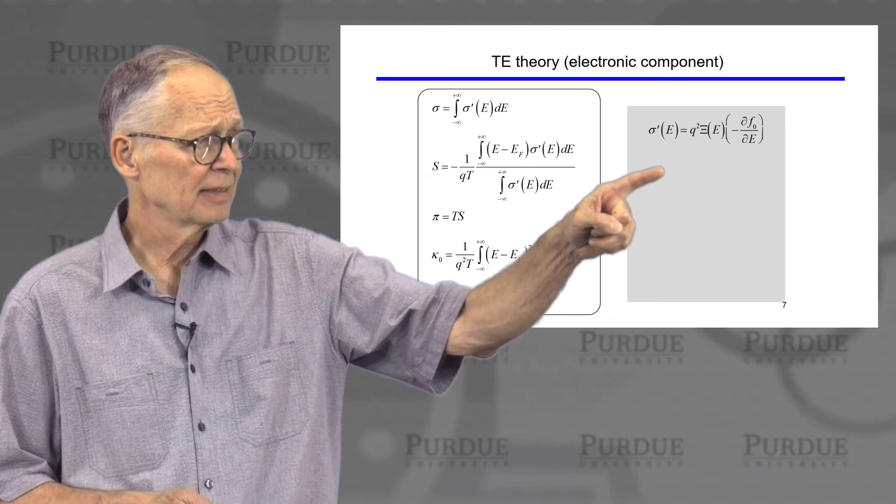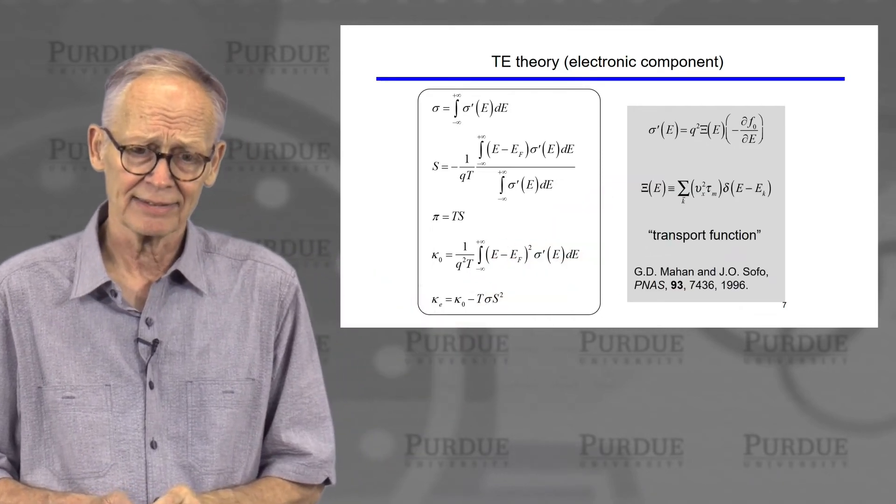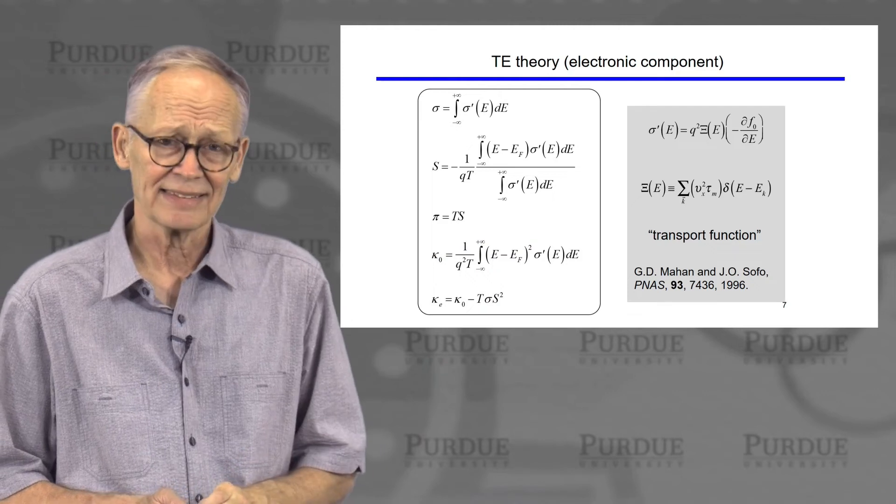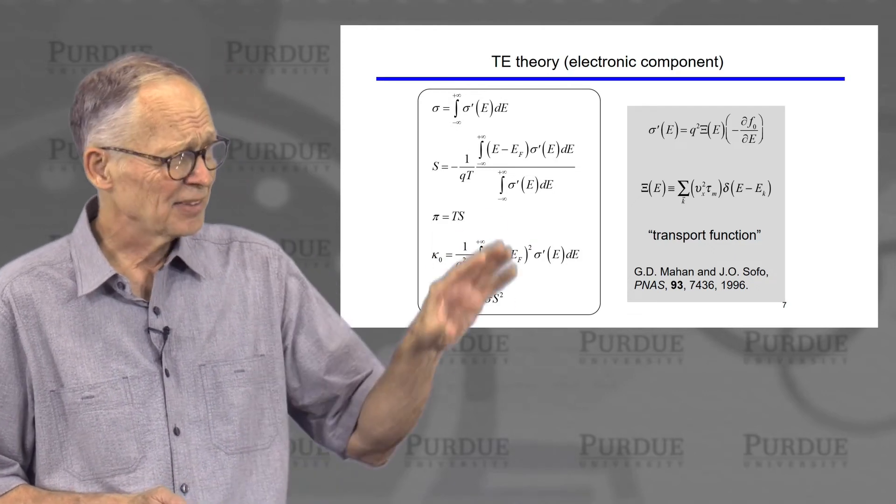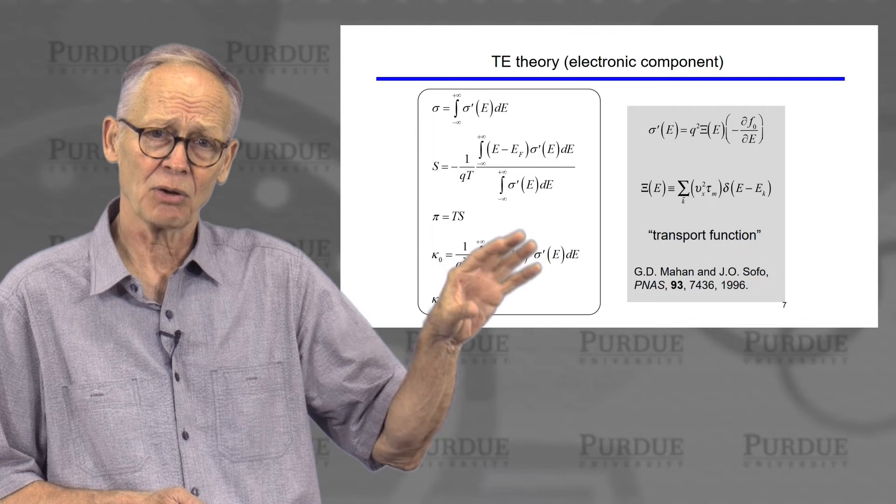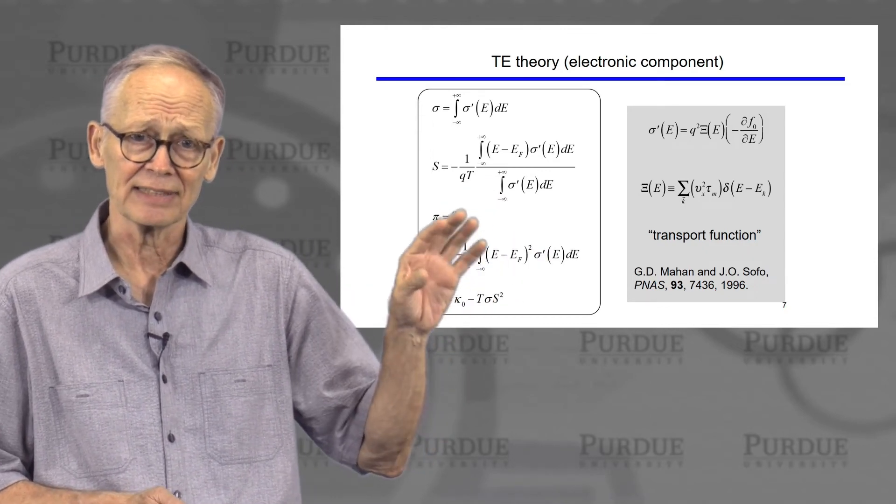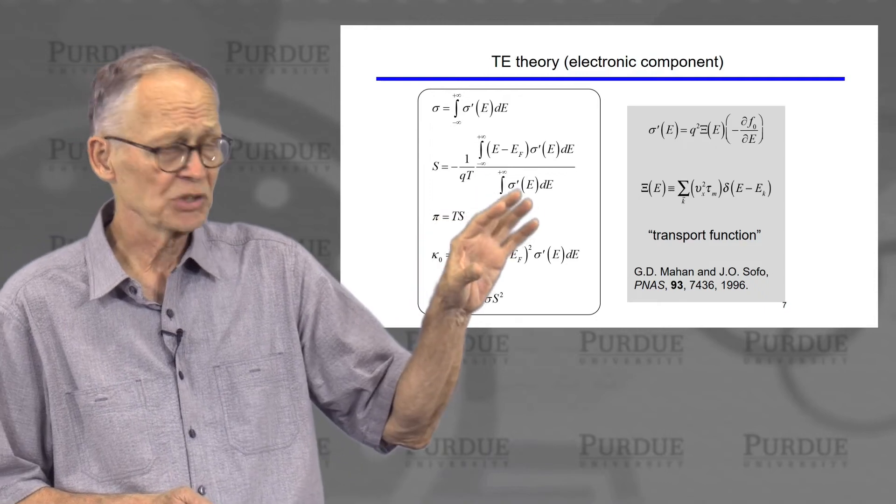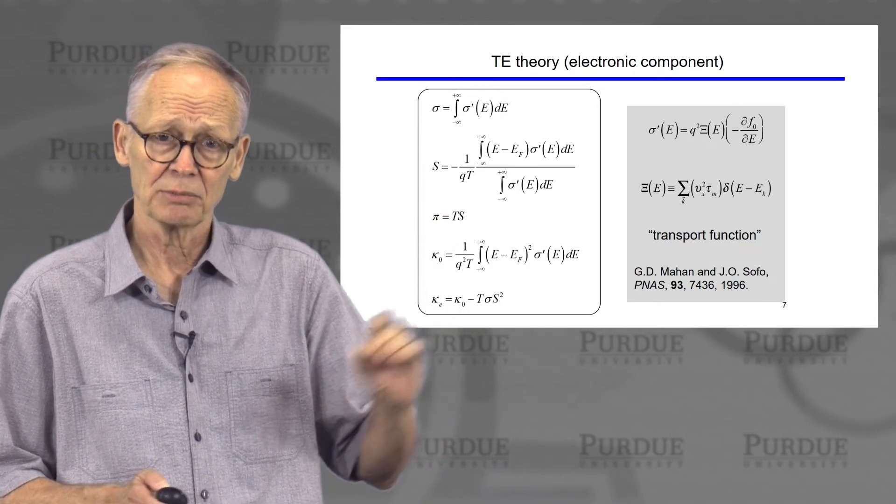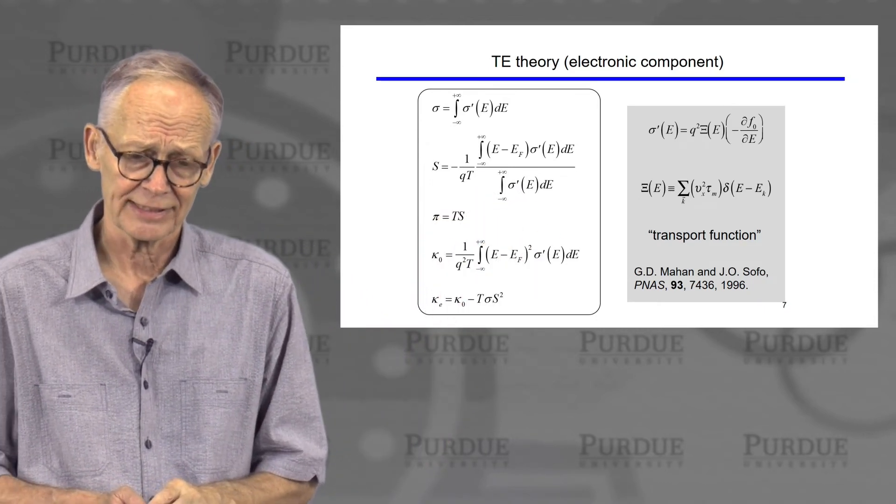It is dependent on a parameter here, zeta, which is known as the transport function. The physical interpretation of this thing is not at all clear. It's related to the underlying band structure and the scattering physics. And once you know this parameter, we can compute any of the transport coefficients.